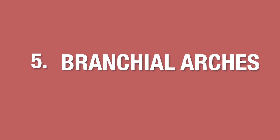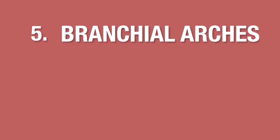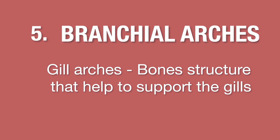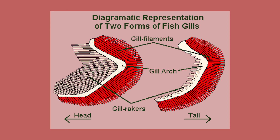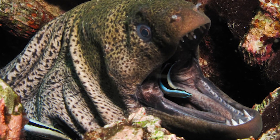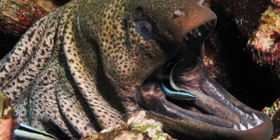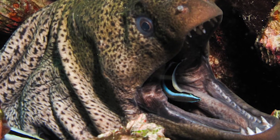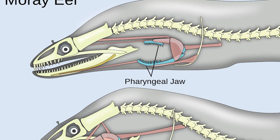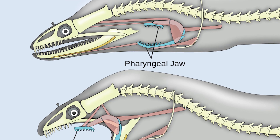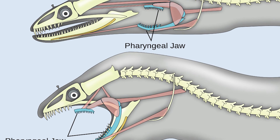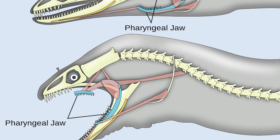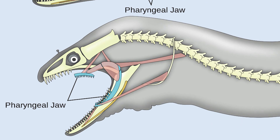Branchial arches, also known as gill arches, are bone structures that help to support the gills. The branchial system is primarily used in the respiration system, but in certain circumstances it could be used for feeding, particularly in carnivorous species. Some species such as eels have a modified gill arch called a pharyngeal jaw, equipped with pharyngeal teeth to hold their prey.